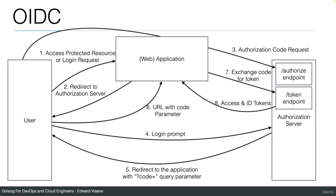That's the complete flow — a logical overview of how to authenticate. We're going to implement this in Go, building the authorization server, the web application, then using a browser to log in. The web application will redirect us to the authorization server, we'll log in, and then retrieve user information from the ID token, which contains user info like a login and proves we are authenticated.